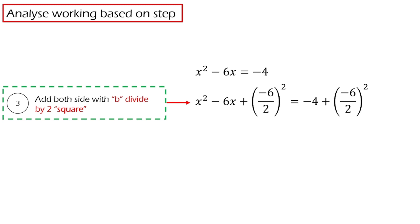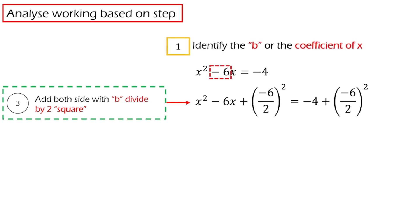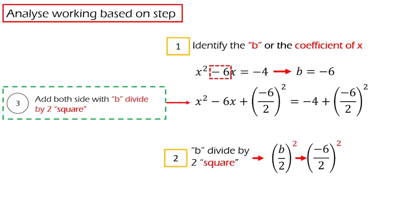I have broken down step 3 for you. The first part is we identify B, which is the coefficient of x. In this case, B is negative 6. The second part is we compute (B divided by 2) squared, and then we add it to both sides. As simple as that.